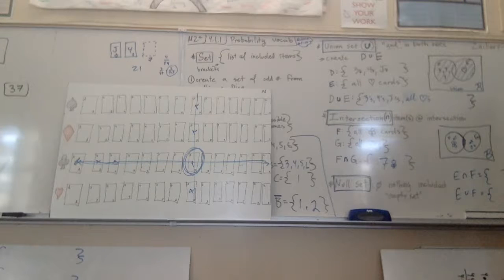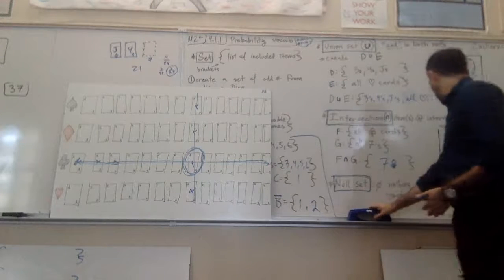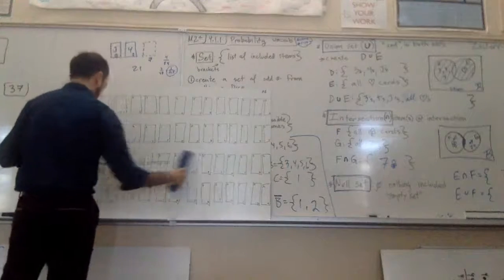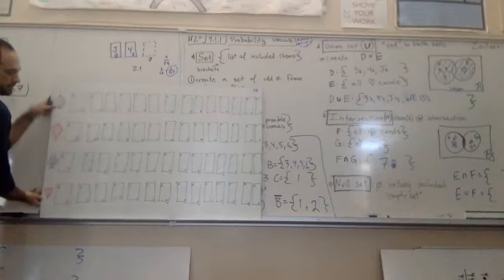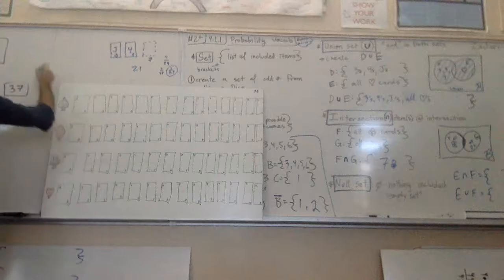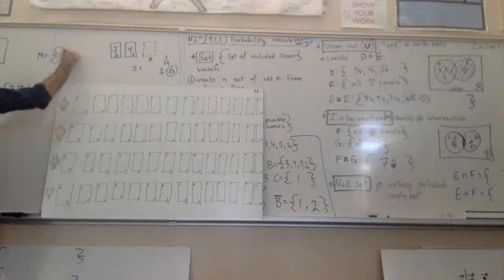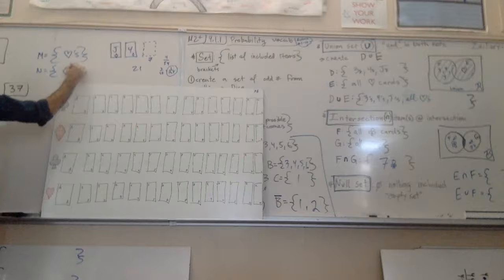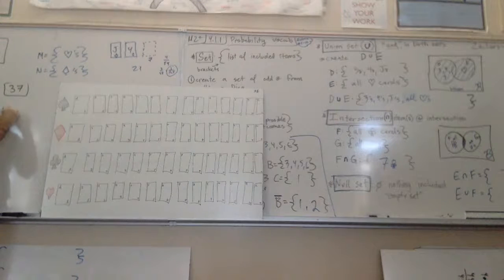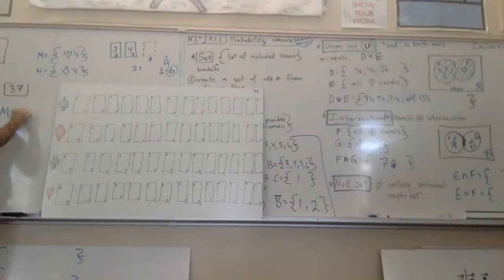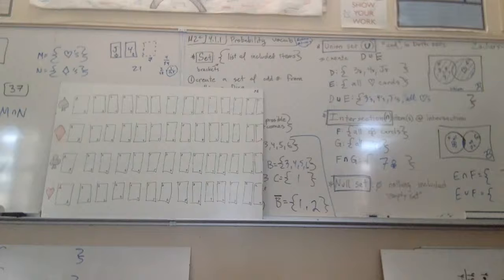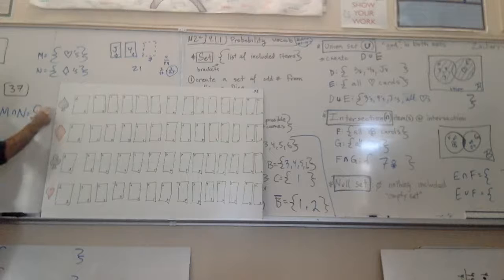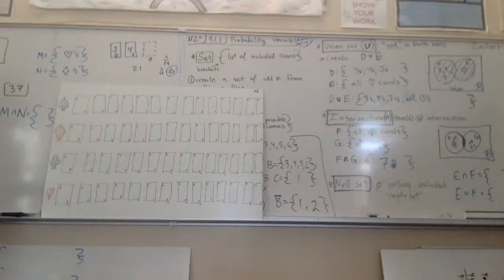How about this? The last one. No, not the last one. Alright. What if I miss - we have set M, and that's hearts. And we have set N, that's diamonds. And I want you to do M intersection N. Oh, what goes in that set? What goes in that? Anything?